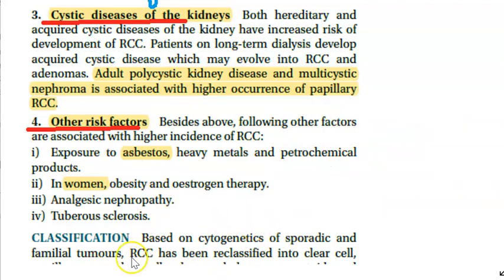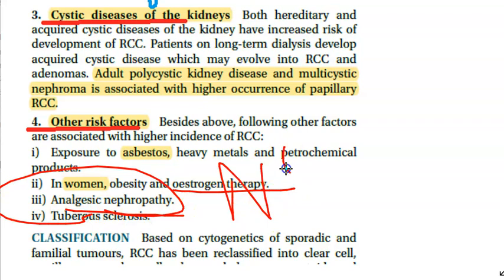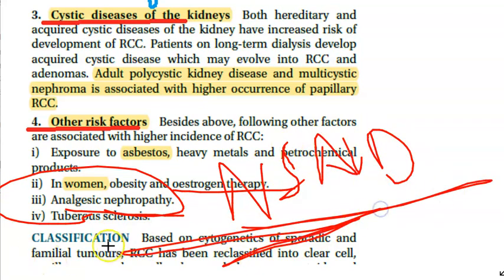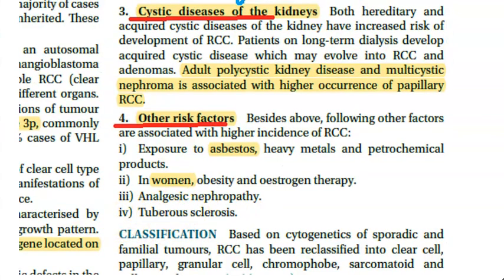Other risk factors include exposure to asbestos, estrogen therapy such as hormone replacement therapy after menopause, analgesic nephropathy where NSAIDs like aspirin and ibuprofen can damage the kidney, and tuberous sclerosis - an autosomal dominant genetic condition that causes growth of tumors on the brain, kidney, heart, and other organs.